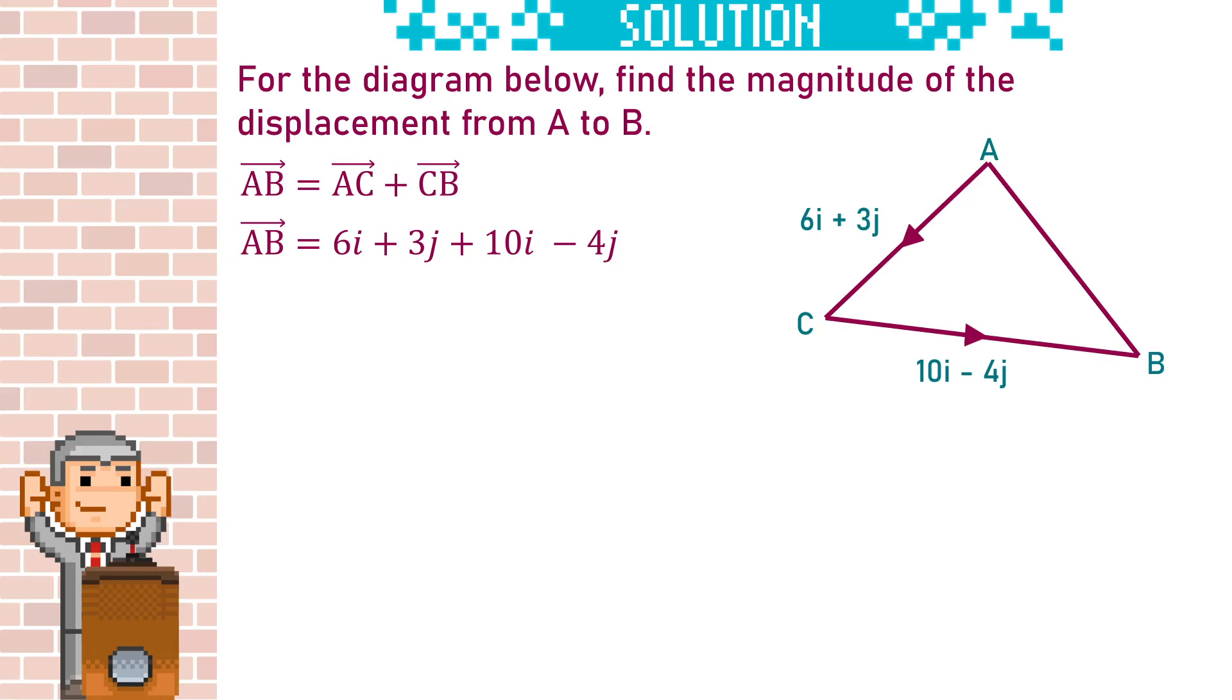Add the i's together will be 16i, add the j's together will be minus 1j or minus j. We can draw a right angle triangle for these forces. i is the right hand force and j is the up force. Because j is negative it's going to go down one, so it's going to go down one and to the right 16.